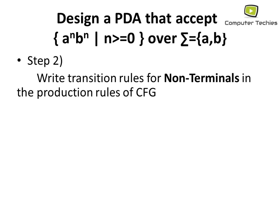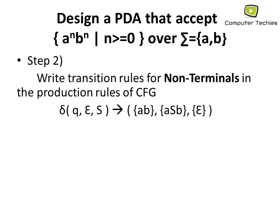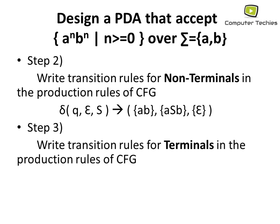Step two: write transition rules for non-terminals in the production rules of the CFG. In the PDA we need transition rules, and in the CFG we have production rules, so we write transition rules for non-terminals from the CFG productions. The first transition rule: if we are on state q, with empty string input and stack top S, then the productions S → ab, S → aSb, or S → ε apply.